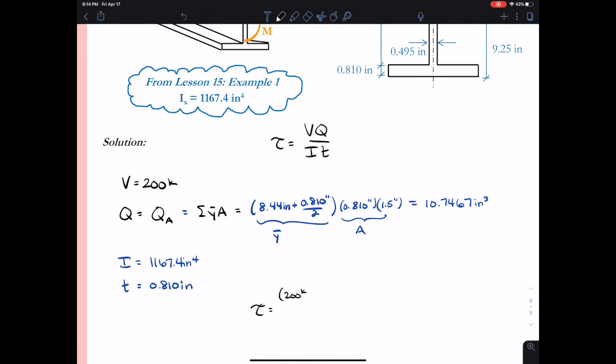Alright so we're ready to calculate shear stress. We have all of the values that we need. We're just going to plug in our numbers. Tau equals 200 kips times 10.7467 inches cubed divided by 1167.4 inches to the fourth divided by 0.810 inches. Doing our calculation we find that the shear stress at point A is 2.273 ksi.